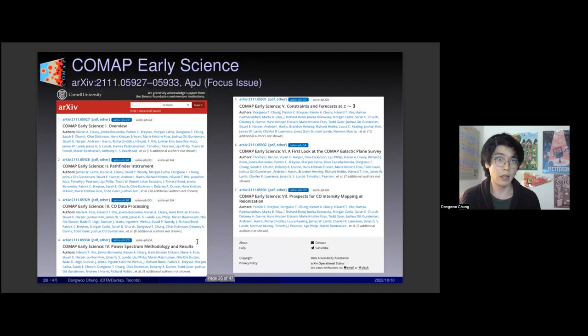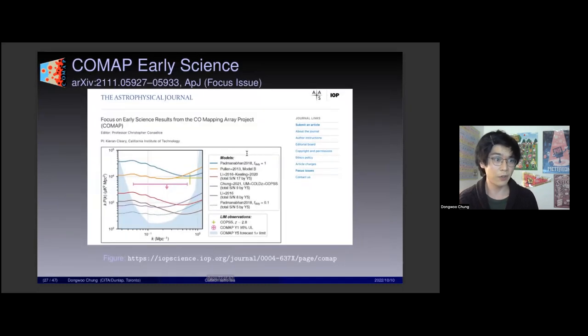We came up with this series of early science papers. These were announced on ArXiv last November, and they cover every aspect of the Pathfinder, from the instrument itself, to the pipeline, to the line intensity mapping science, and also some galactic science that we were able to do with the instrument. These were accepted by ApJ and published in this very nice focus issue that the journal put together for us in July.